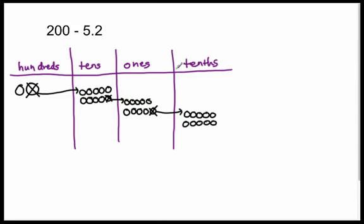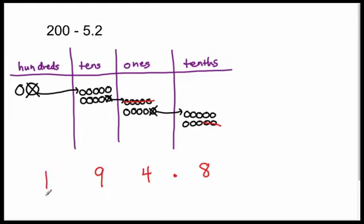So we're trying to subtract two tenths. We do have two tenths to subtract. We're trying to subtract five ones. We do have five or more ones to subtract. So let's go ahead and do our subtraction. Let's take away two tenths. I took away two tenths. How many tenths are remaining? Eight tenths. Between the tenths and the ones place always goes the decimal point. I'm trying to now subtract five ones — one, two, three, four, five. How many ones remain? Four ones remain. I don't have anything to subtract from the tens, and I don't have any hundreds to subtract. So how many tens are here? I have nine tens. And how many hundreds are here? I have one hundred. Therefore, our answer is 194 and eight tenths.